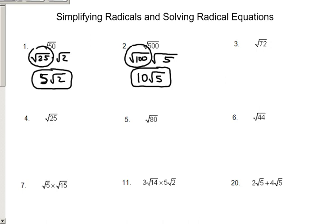Another thing you want to look for, too, is always find the biggest perfect square. You know, when you're doing 500, I'm sure that there's another perfect square in there divisible by it, but it's not as big as 100. So you always want to find the biggest perfect square that goes into it.